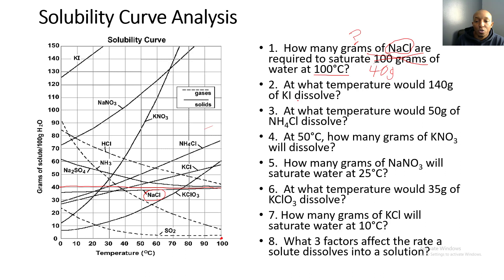Number two: at what temperature would 140 grams of potassium iodide dissolve? We're solving for temperature. 140 grams of potassium iodide is what we need. Let's locate potassium iodide on the solubility curve. We have 140 grams and run all the way across until it hits the line for potassium iodide.